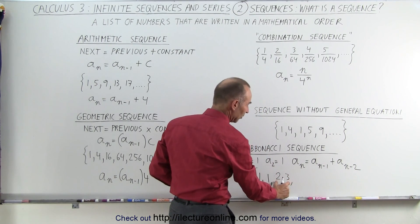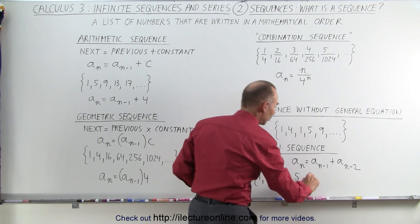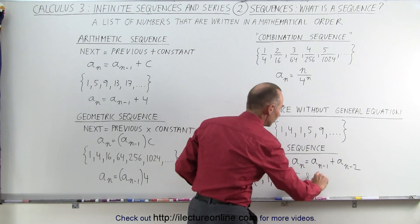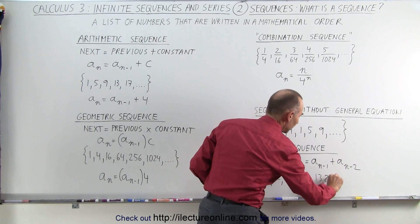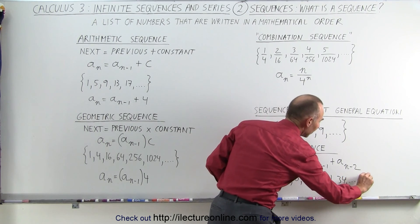Then the next element is the sum of these two, which would be 3. The next element is the sum of these two, which would be 5. The next element is the sum of these two, which is 8. Then these two, that would be 13, 21, and 34, and on and on like this.